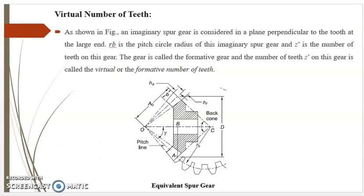Now we will see the further part. The first point is virtual number of teeth — virtual means imaginary or formative. As shown in the figure, an imaginary spur gear is considered in a plane perpendicular to the tooth at the large end. Rb is the pitch circle radius of this imaginary spur gear and Z' is the number of teeth on this gear. The gear is called the formative gear and the number of teeth Z' on this gear is called the virtual or formative number of teeth.